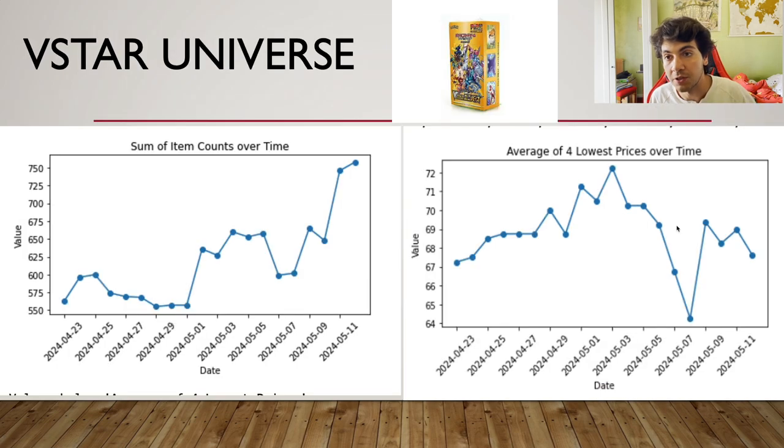Now moving on to VSTAR Universe here, as you can see, we have the same two charts. This is the total number of boxes listed in the European market CardMarket. And this is the average price of the four lowest listed. And apart from this little spike here that on the chart looks significant, but as you can see it went from 67 to about 64, which after all is roughly a 5% move in a day.